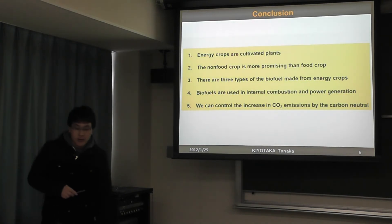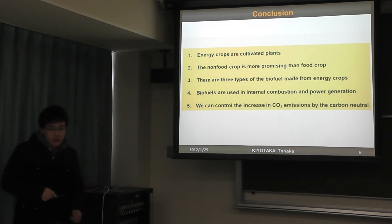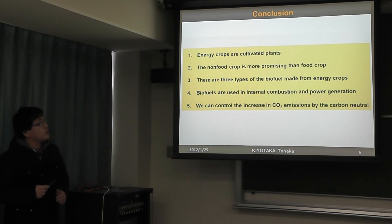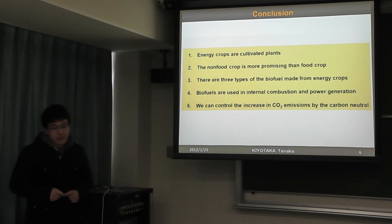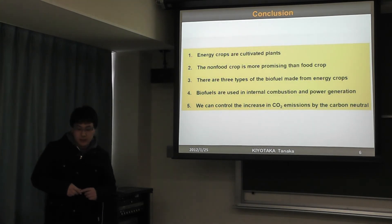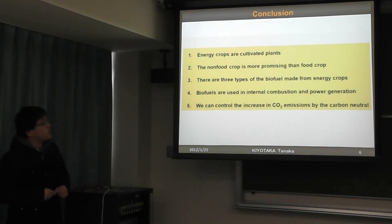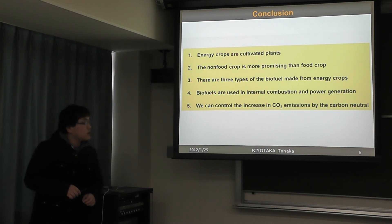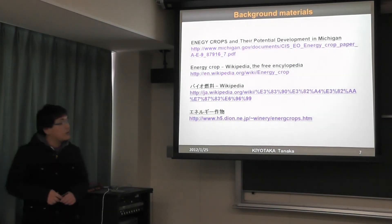Conclusion: Energy crops are cultivated plants. Non-food crops are more promising than food crops. There are three types of bio-fuel made from energy crops. Bio-fuel is used in internal combustion engines and power generation. We can control the increase in CO2 emissions through the carbon neutral cycle. Thank you for your attention.